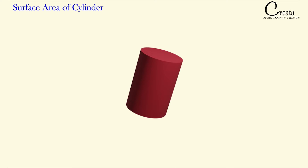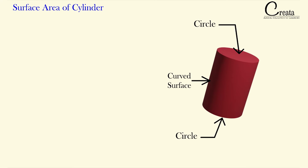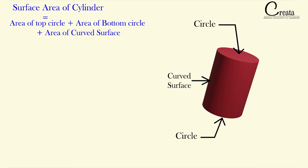Let's move further and try to calculate the surface area of this cylinder. Let's see if our fundamental of surface area is matching here or not. In the introduction chapter, we have seen the surface area is the total area of the surface of a 3D solid object. Here our 3D solid object is a cylinder, and we have to calculate its surface area. This cylinder is composed of two circular faces and one curved surface.